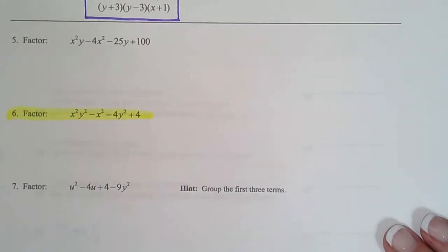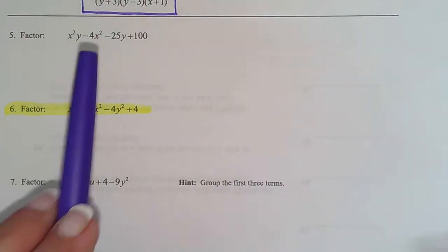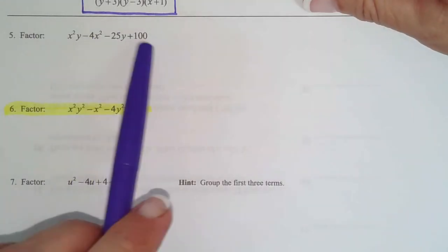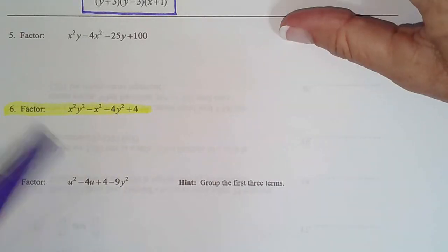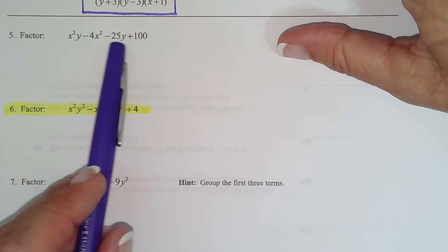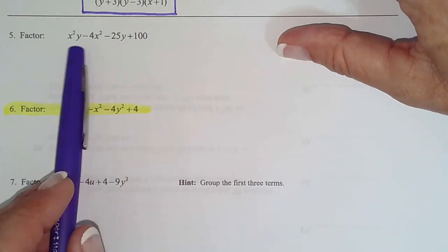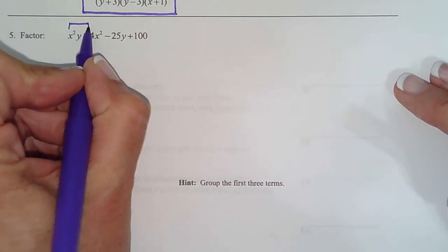So let's do 5 together and then you can try 6 since 6 is going to be on your test. The first thing I recognize is that there's four terms. Whenever there's four terms, we group. But before we group, we need to see if there's anything common to all the terms. No numbers, no x's, no y's. So we're good to start our grouping.